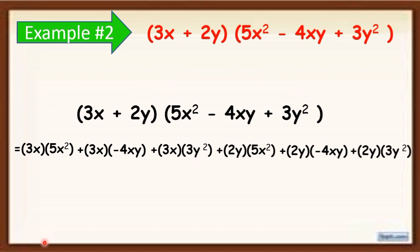Now simplify: 3x times 5x squared will become 15x cubed. Why? 3 times 5 is equal to 15. Copy the base, which is x, then add the exponents of the base — 1 and 2 — so we get a cube. That is 15x cubed.